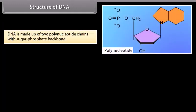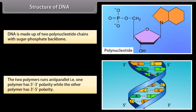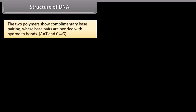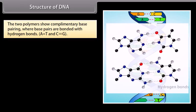DNA is made up of 2 polynucleotide chains with a sugar phosphate backbone. The two polymers run anti-parallel — one polymer has 5-prime to 3-prime polarity, while the other polymer has 3-prime to 5-prime polarity. The two polymers show complementary base pairing, where base pairs are bonded with hydrogen bonds.